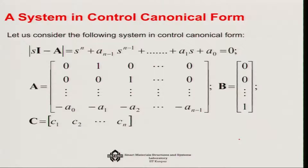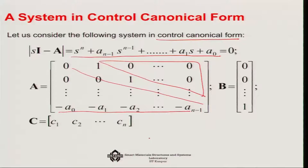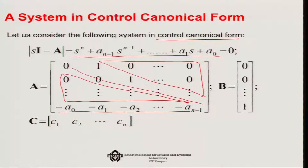Let us bring this in the context of control canonical form. The determinant of SI minus A is S^n plus A_{n-1} S^{n-1} plus ... plus A_1 S plus A_0 equals zero in control canonical form. We can easily construct this: only the last row has all the coefficients, the super-diagonals are unity, and the rest are zeros. B also has a special form — zeros followed by unity — and C is fully populated with coefficients.